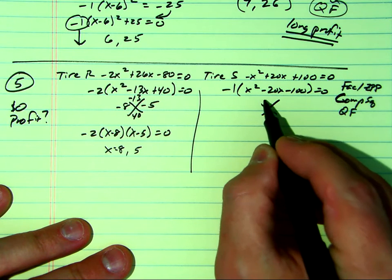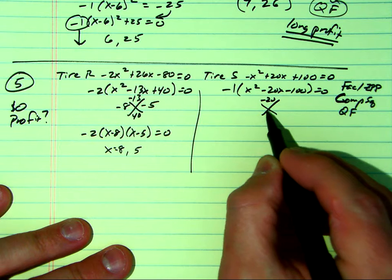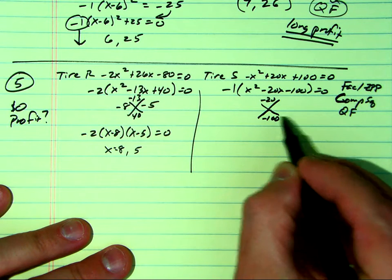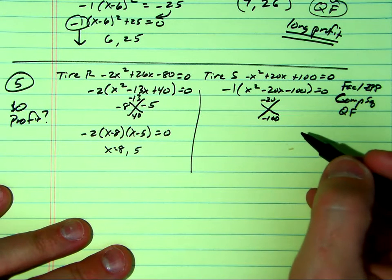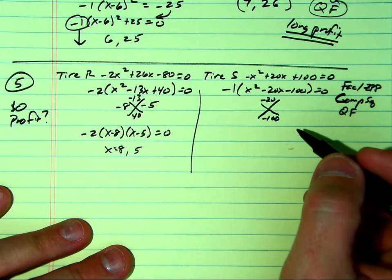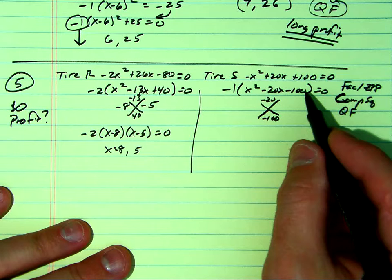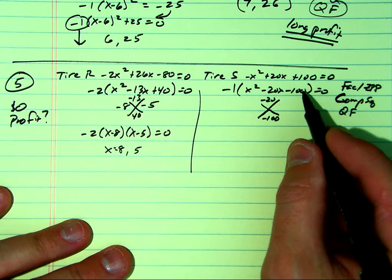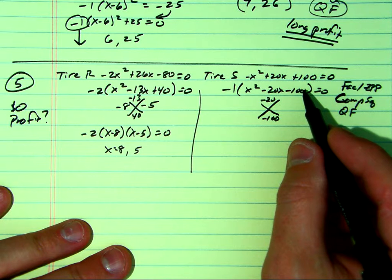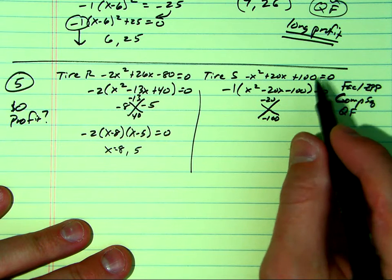What two numbers add up to negative 20 but multiply to negative 100? Anybody? Is there anything? Is it negative 10 and negative 10? Isn't it supposed to be negative 100 though? Did I write down the wrong equation?